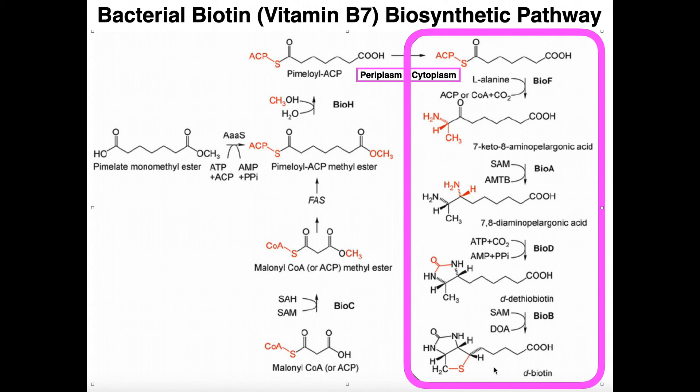Different organisms are going to consume these bacteria in some form or fashion, and then that biotin literally travels up the food chain to the point where you get to humans and other mammals. They're going to eat other organisms which have already obtained that biotin. Originally the biotin is made in bacteria or plants, and herbivores eat those, maybe carnivores eat those, and that's how we get it.